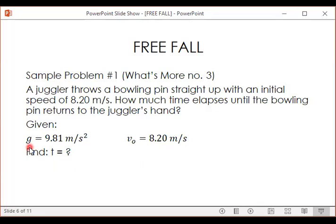How much time elapses until the bowling pin returns to the juggler's hand? So we have a constant g, Earth's gravitational acceleration, which is 9.81 meters per second squared. And we have initial speed or velocity, which is 8.20 meters per second. So what we need to find is time elapsed.